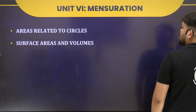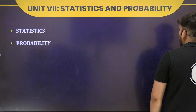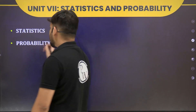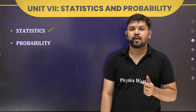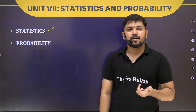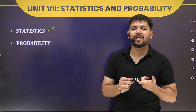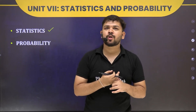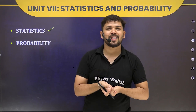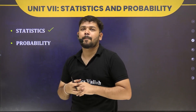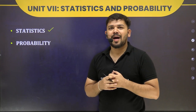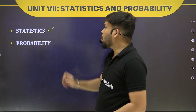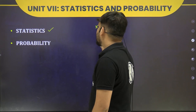Next is Statistics and Probability — both are day-to-day life oriented chapters. In Statistics, we cover mean, mode, and median, which you know from previous grades. Now we go further with grouped data and ungrouped data, continuous and discontinuous intervals, and how to calculate mean, mode, and median for grouped data and the relationship between them.